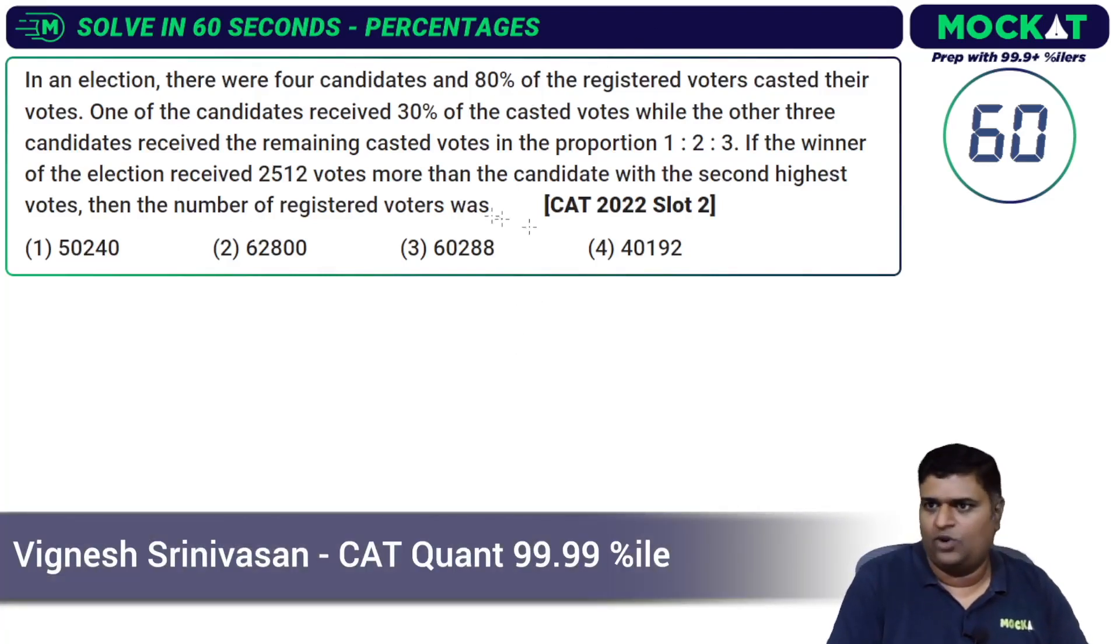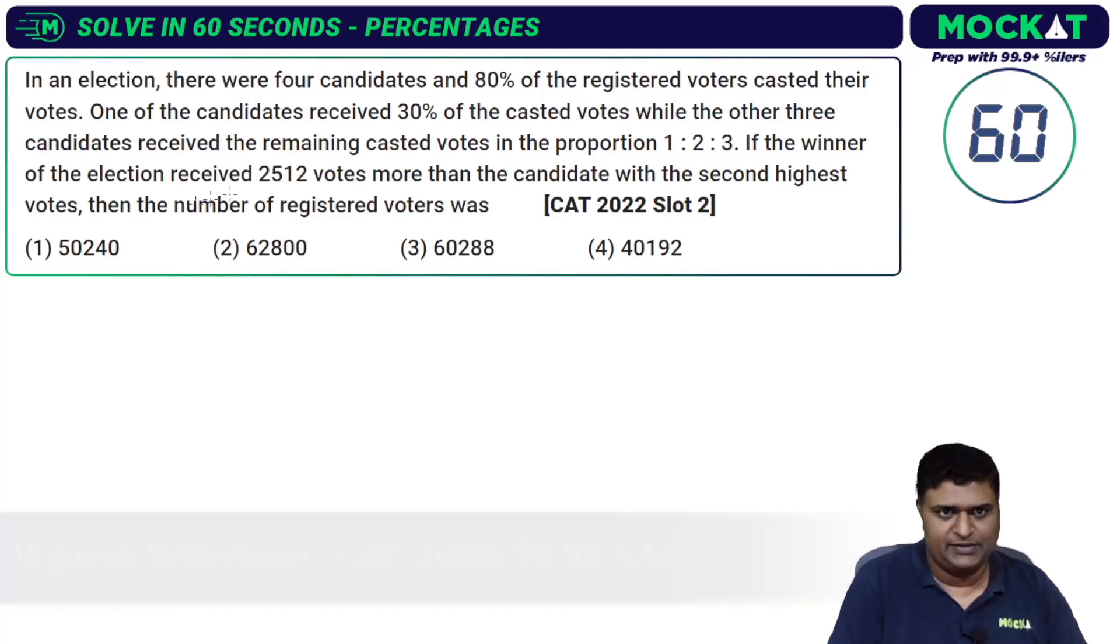On to a percentages question - a seemingly long question. Let's do it in 60 seconds. In an election there were four candidates and 80 percent of the registered voters cast their votes. Let's take that down: 80 percent are casting.